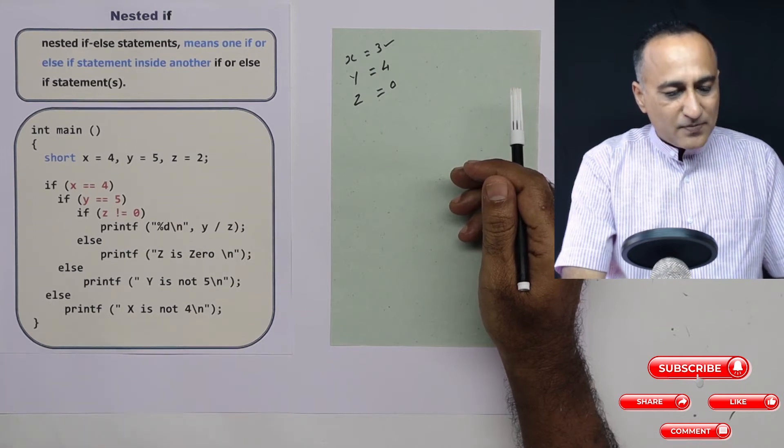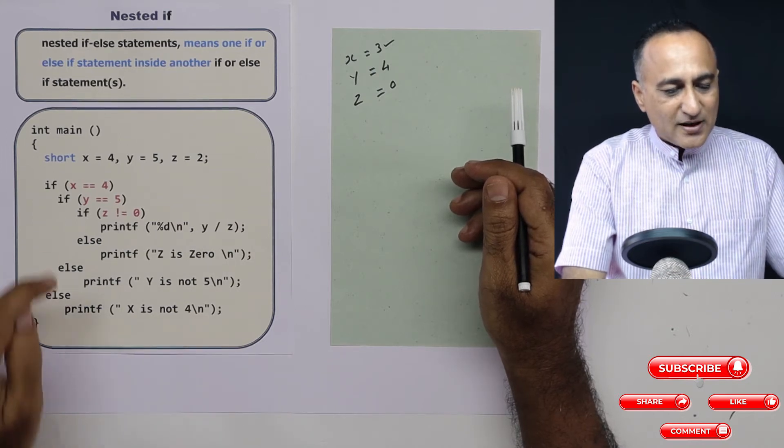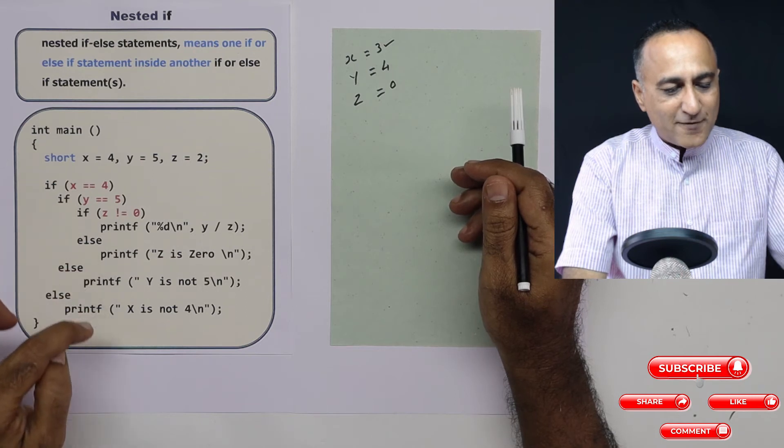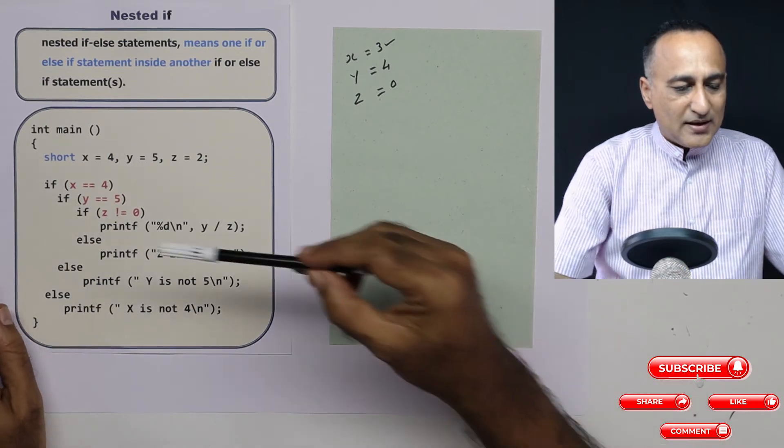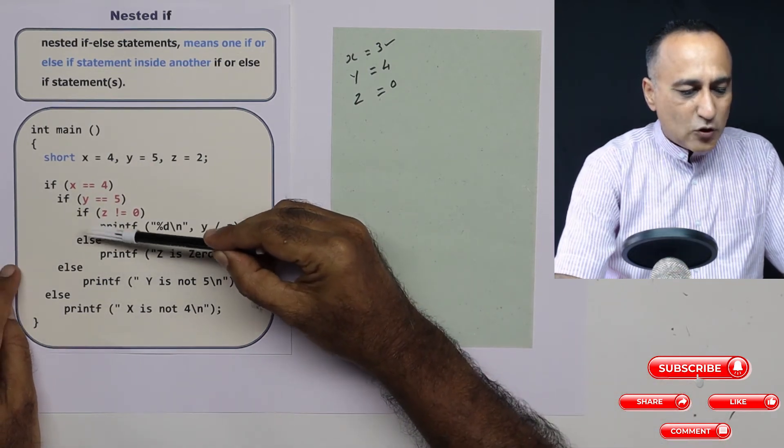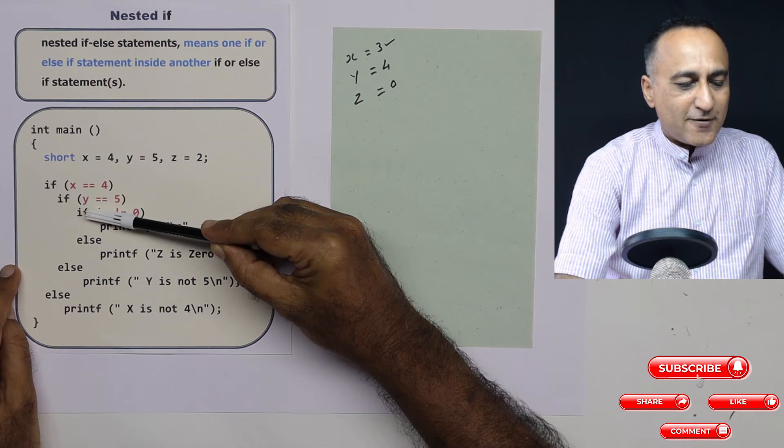Now there's a little bit of confusion here because of the number of if and else. So in order to clear that confusion you need to remember one rule.